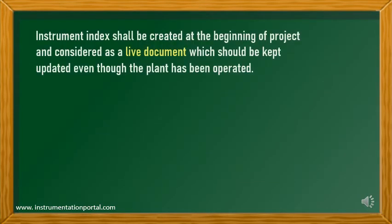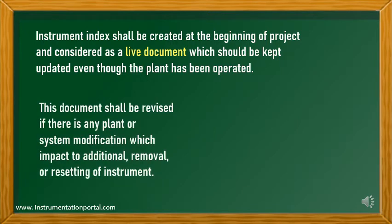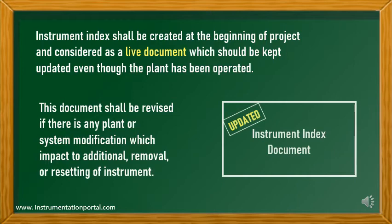Instrument index will be created at the beginning of a project and is considered a live document which should be kept updated even after the plant has been operated. The document shall be revised if there is any plan or system modification which impacts the addition, removal, or resetting of instruments.